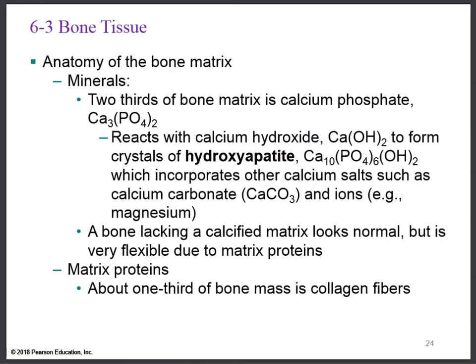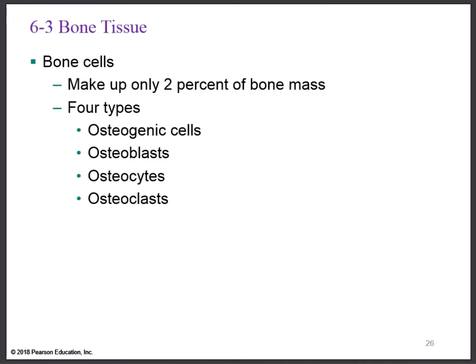So two-thirds of the bone matrix is made up of minerals, with the final product being hydroxyapatite incorporating different bone salts and ions. The other one-third is collagen fibers. Bone cells only make up about 2% of the bone mass, but there are four types we need to know: osteogenic cells, osteoblasts, osteocytes, and osteoclasts.